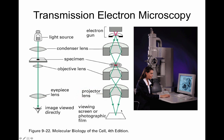Notice that in transmission electron microscopy, what you are hoping to see are the electrons which are transmitted through the sample, not only the electrons that are being scattered from the surface. That is a big difference between scanning and transmission electron microscopy.